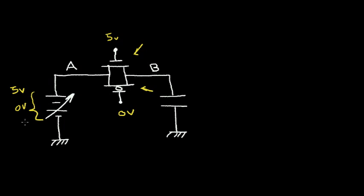Now if our voltage is in between — if we're at 2.5 volts — both transistors conduct. The NMOS does some work and the PMOS does some work. So this is the solution: for any voltage at the battery between 0 and 5 volts, we can transfer the full voltage at node A over to our capacitor at node B.